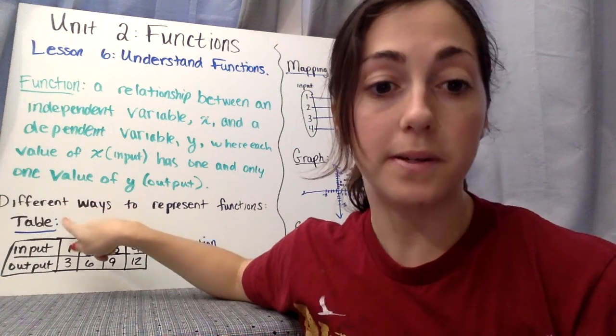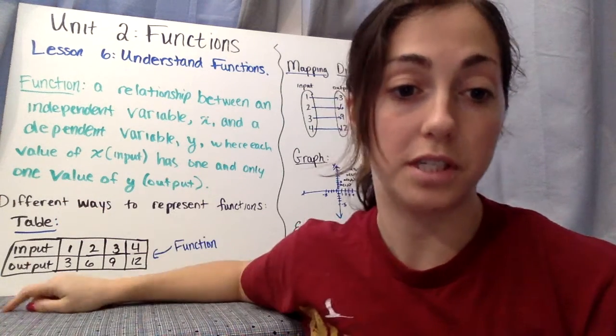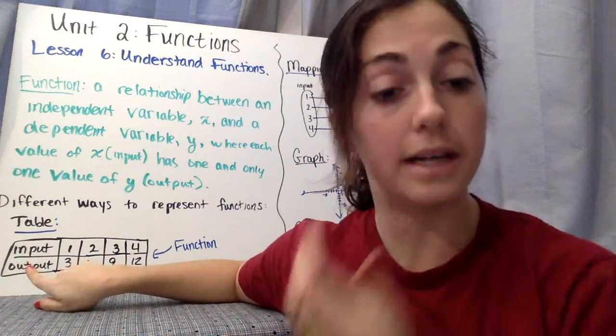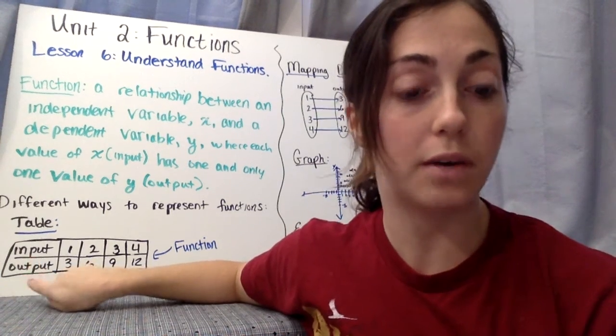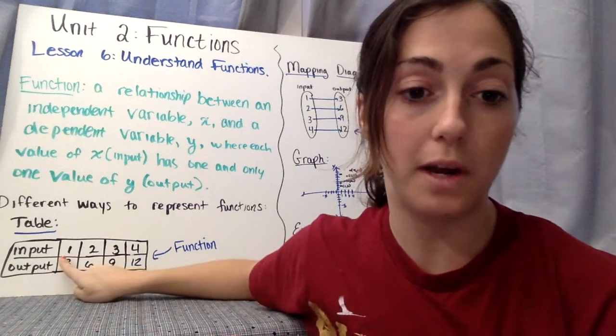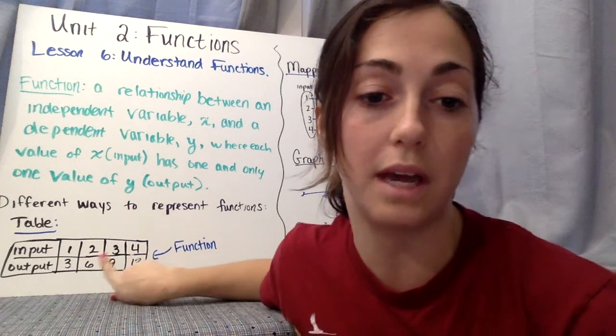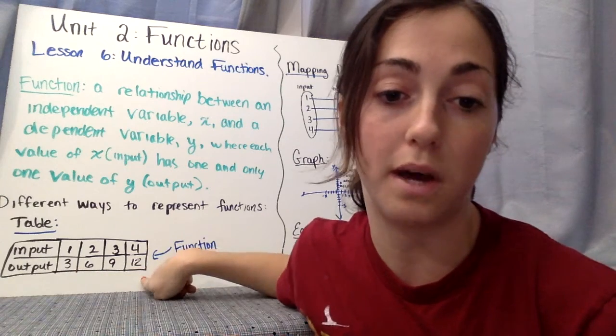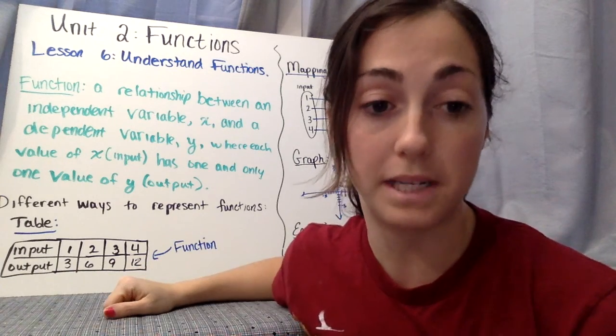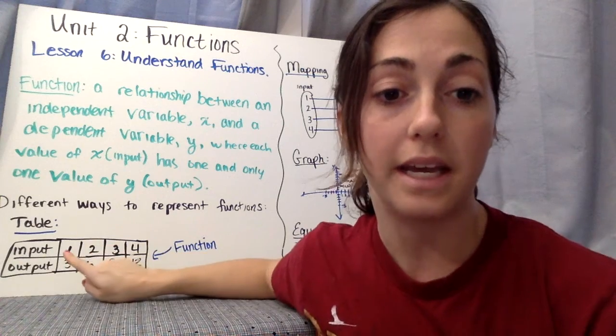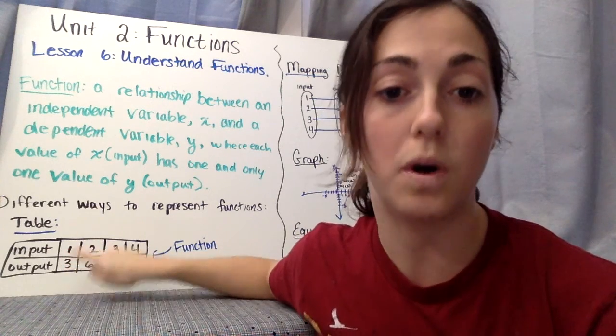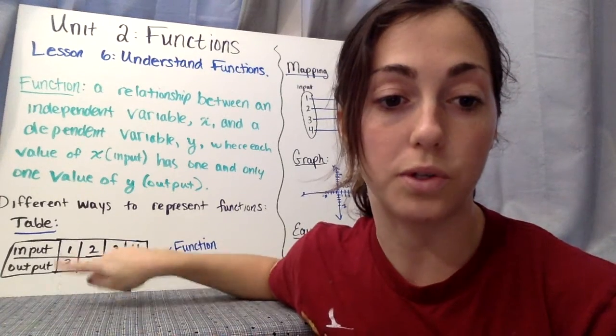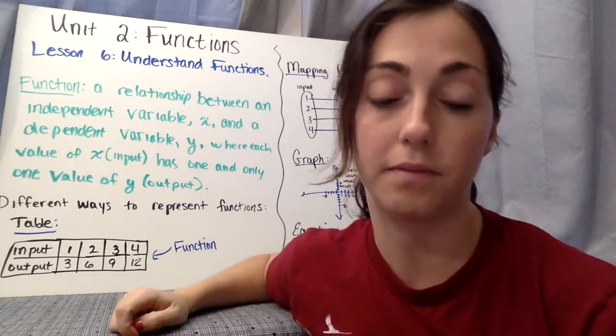We're going to talk about different ways to represent functions. The first way you see here is a table. A table has input values and corresponding output values. So our input values are 1, 2, 3, and 4, and the corresponding output values are 3, 6, 9, and 12. We know this is a function based on looking at our table because each input has one output, only one output. So there's no repeats in our input.